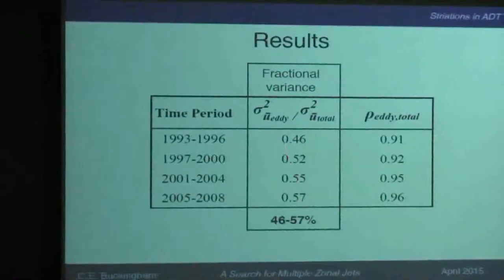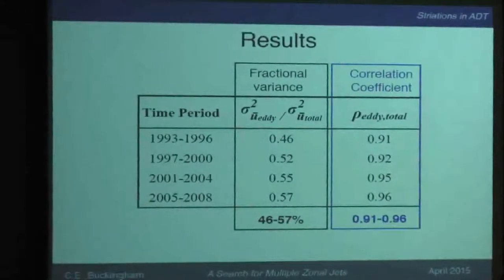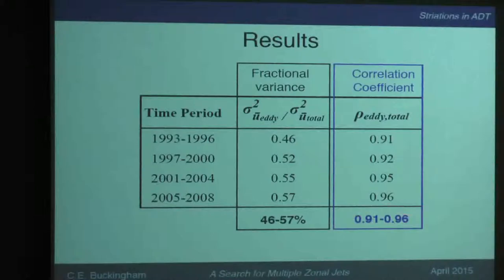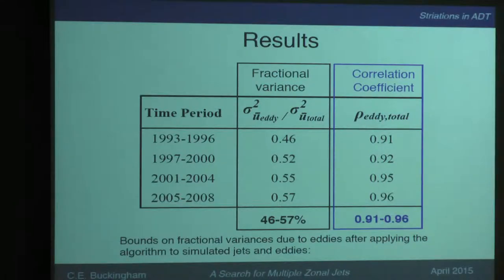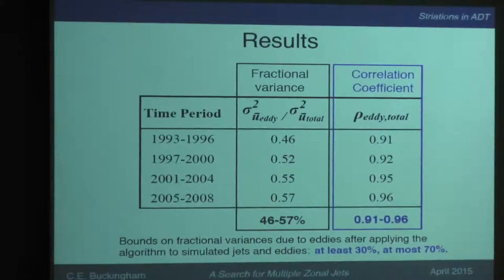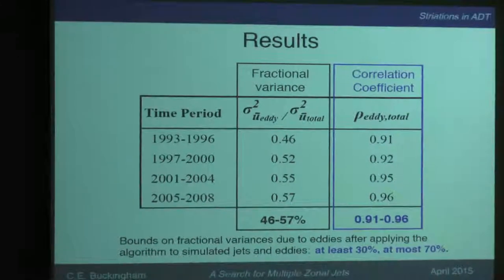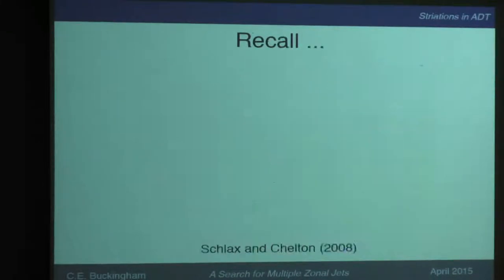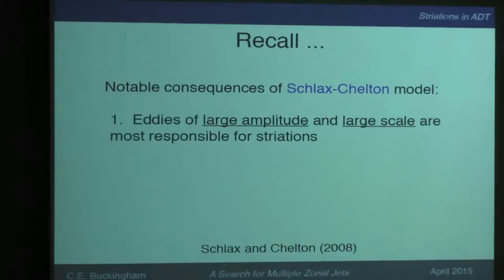You get a fraction of variance of about 50%, and the correlation coefficient between the eddies and the observed is quite high — 0.9. I tested this with simulated eddies and jets and found I'm missing a lot: the eddy contribution can be as small as 30% or as large as 70%. So the algorithm doesn't do a perfect job, but we can test the hypotheses that Schlack and Chelton put forth.